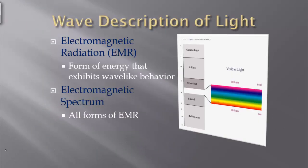So let's look at the wave description of light. First we have electromagnetic radiation — we're going to abbreviate it EMR just because electromagnetic radiation is a lot to write. Electromagnetic radiation is the form of energy that exhibits wave-like behavior. And if we put together all the different forms of energy that exhibit wave-like behavior, we get an electromagnetic spectrum — so this is just all forms of electromagnetic radiation.